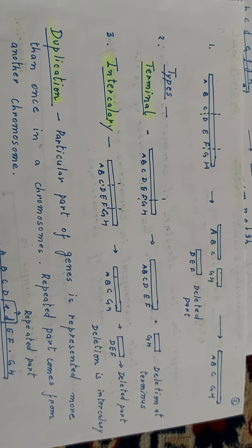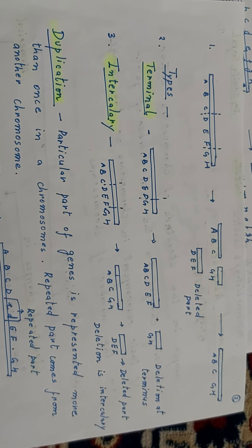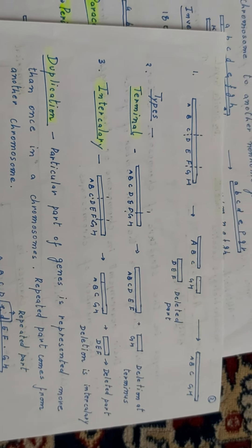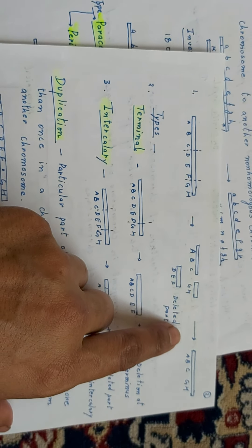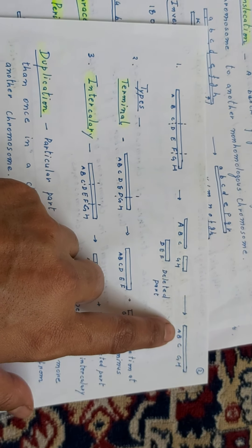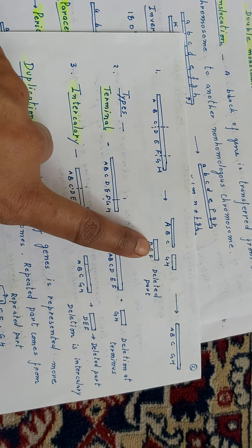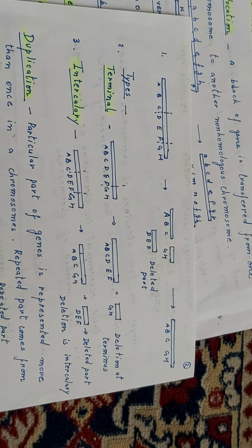After deletion of D, E, F, the next gene arrangement in the chromosome becomes A, B, C, G, H — meaning the number of genes deleted is 3. Next is the type of deletion: first is terminal, another is intercalary.